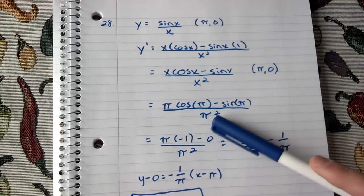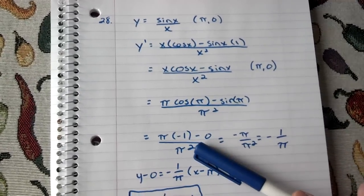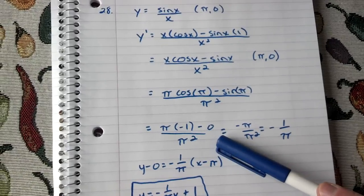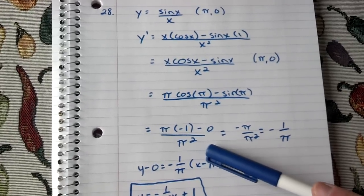Once you've figured that out, you have to actually use the unit circle, because we know that cosine pi is negative 1, and sine pi is 0. And you can't forget about the pi squared in the denominator.